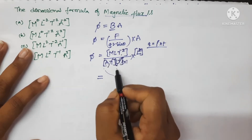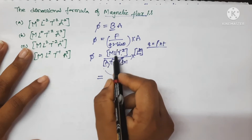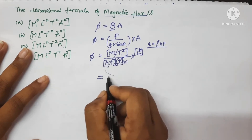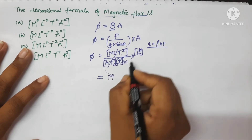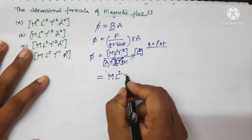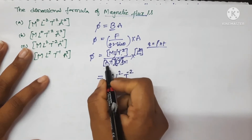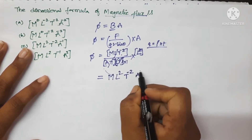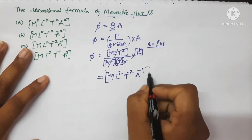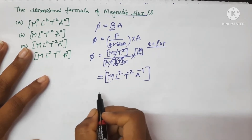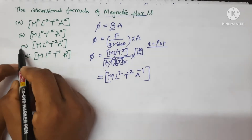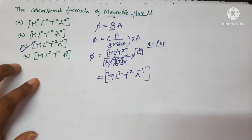Here T and T⁻¹ will get cancelled, and L and L will get cancelled. The remaining terms are M, L², T⁻², and writing A in the numerator gives A⁻¹. So the dimensional formula is ML²T⁻²A⁻¹. C is the correct option.